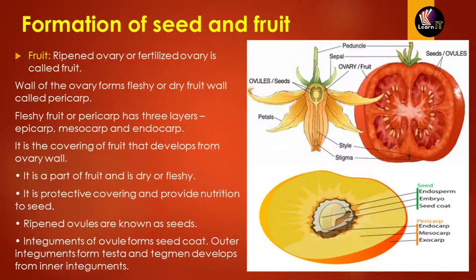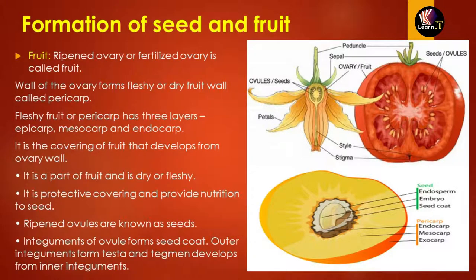Looking at the diagram, it divides into seeds and pericarp. Seeds consist of three things: endosperm, embryo, and seed coat. Pericarp consists of three things: epicarp, mesocarp, and endocarp. Epicarp is also known as exocarp.